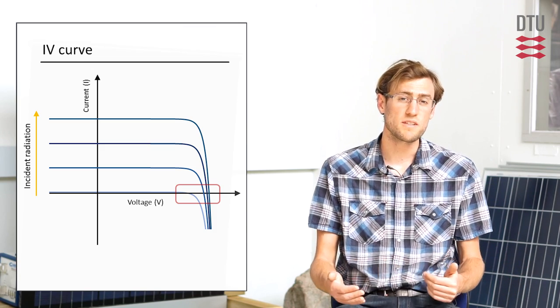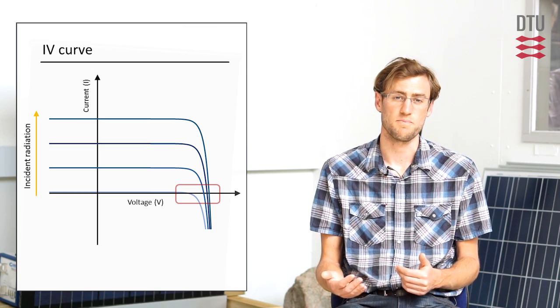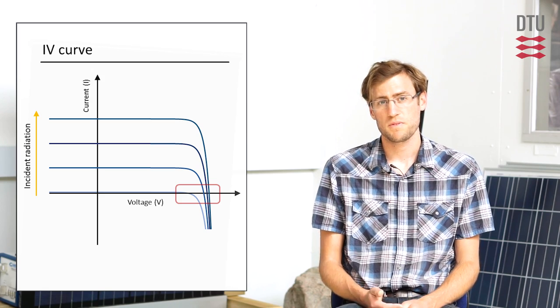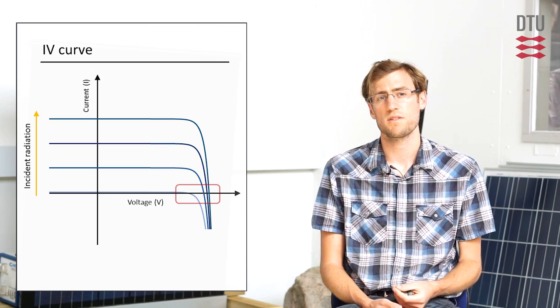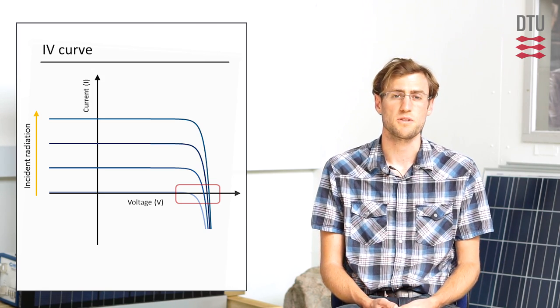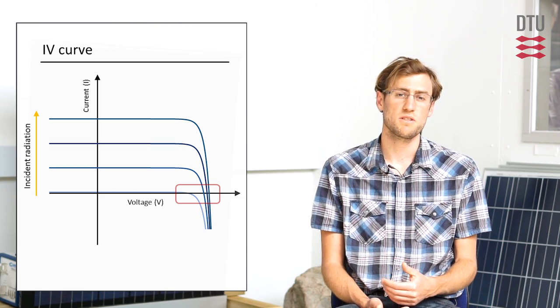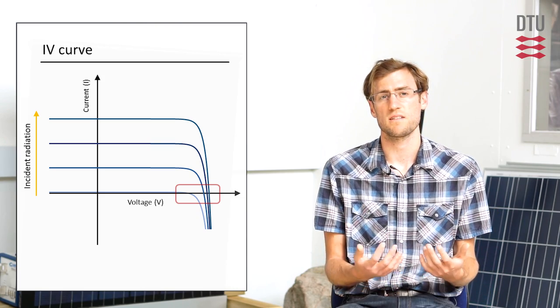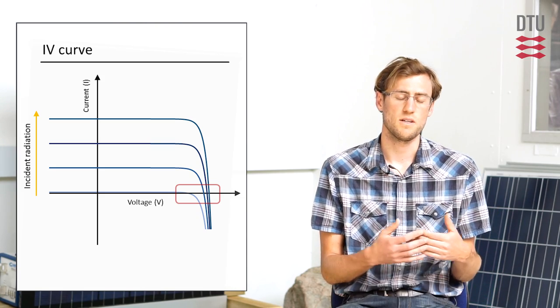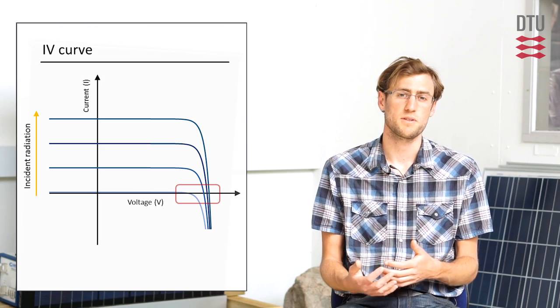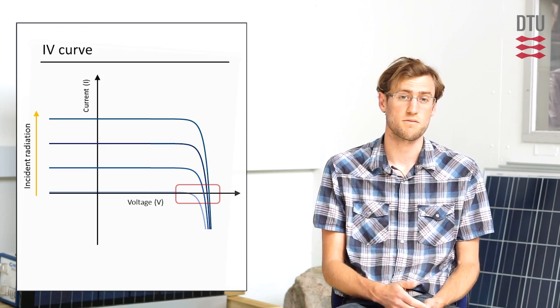VOC varies logarithmically with light intensity. However, VOC is much more sensitive to temperature than ISC. So VOC on a typical silicon device is about 0.3% per degrees C in the negative direction.